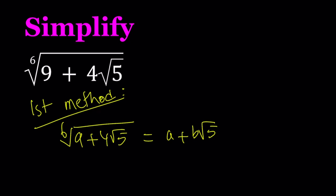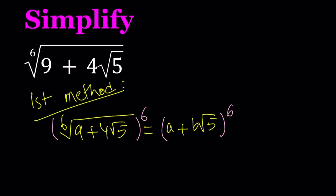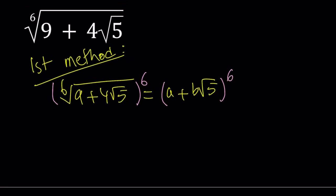Let's go ahead and take both sides to the sixth power. Obviously in this case you want a and b to be positive because under the radical we have two positive terms. When we take to the sixth power, a plus b root 5 to the sixth power becomes 9 plus 4 root 5. We're going to try to find the a and b values that satisfy this equation.